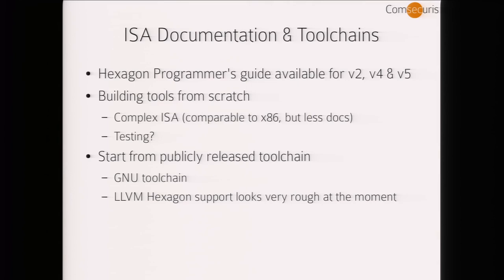It is much easier to start from a publicly released toolchain. Qualcomm releases patches to the GNU toolchain — GNU binutils and GCC — and has recently posted Hexagon patches to LLVM, which are now in the tree. However, Hexagon support in LLVM looks rough: the MC framework for disassembly is missing entirely. The GNU toolchain seems much more mature; the LLVM support appears experimental but is probably the direction they'll eventually move.